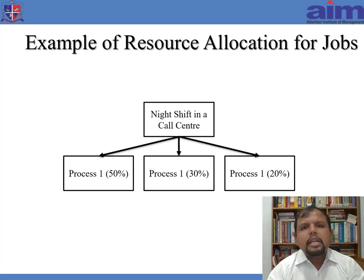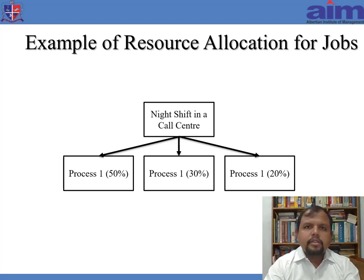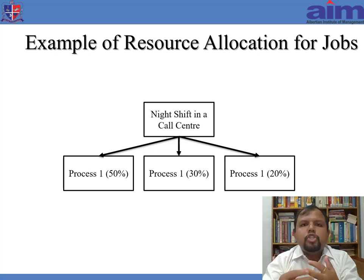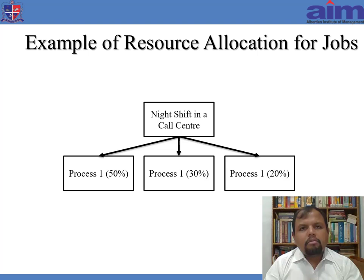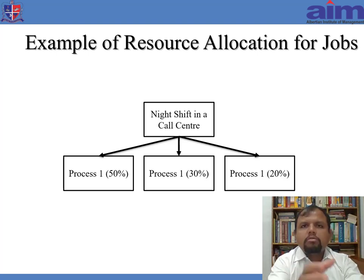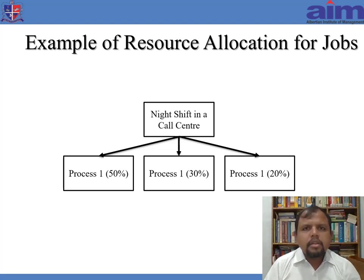Now let's look at an example of resource allocation for jobs. I've taken the example of a private call center. In a private call center, you could have processes for BSNL, Airtel, and Jio services — meaning the call center representatives can handle calls for all three. But it's not that every executive takes calls for all three. A certain percentage of people are allocated for Airtel, a certain percentage for BSNL, and a certain percentage for Jio.